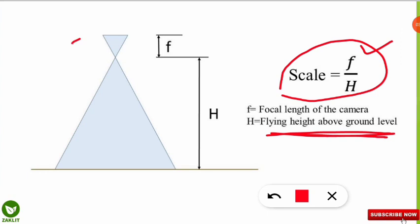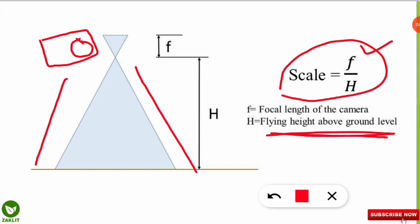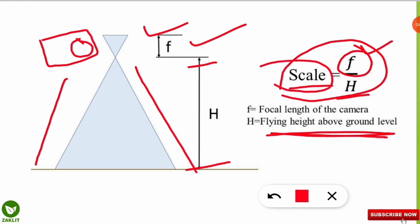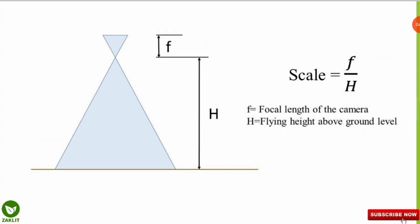Assuming the camera is positioned on a body carrying it above the ground to capture an image of the ground below — if we know the scale and flying height but not the focal length, we can find the focal length. These variables are all interlinked. The formula is: focal length of the camera divided by the flying height above ground level gives the scale of the aerial photograph. This is a frequently asked question in entrance examinations.